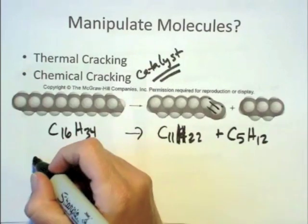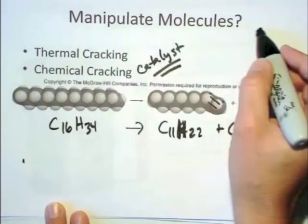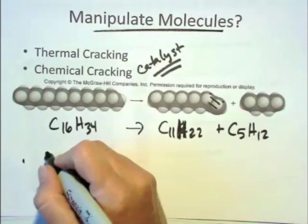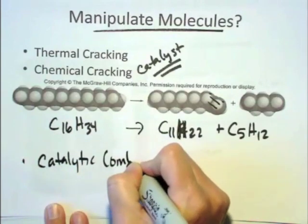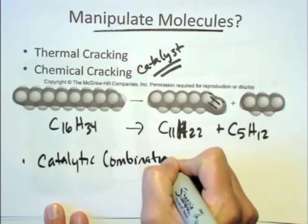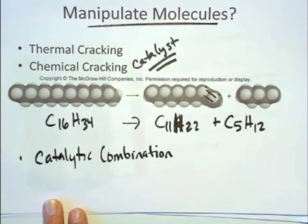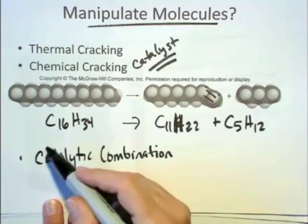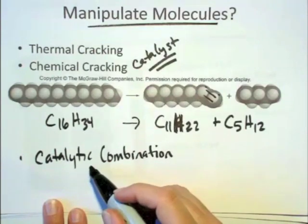Finally, a third type of manipulating the molecules that are in the petroleum is something called catalytic combination. And that is taking the gases that are not terribly useful - the methane, ethane, propane, and butane that they call the liquefied refinery gases - separating those off and combining them using a catalyst.